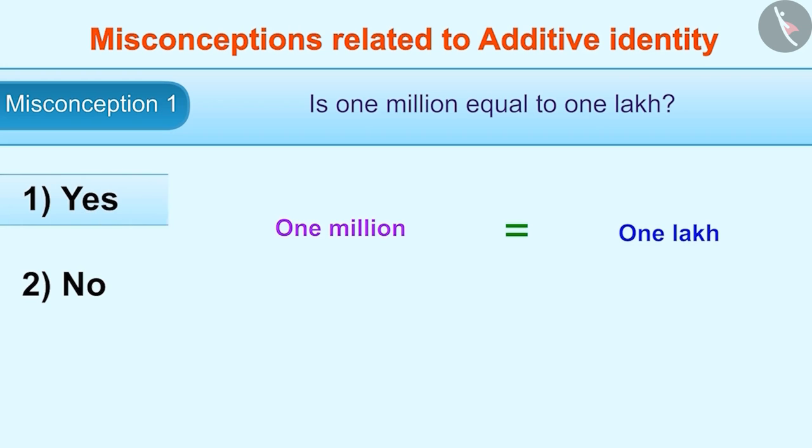This is a misunderstanding. To correct it, let's represent numbers in numerals. 1 million is expressed this way.